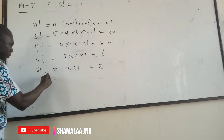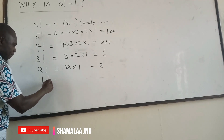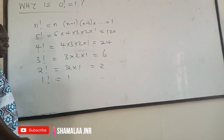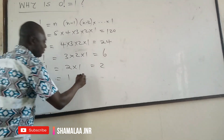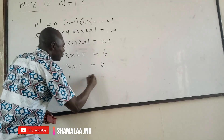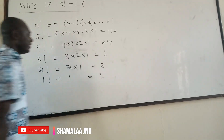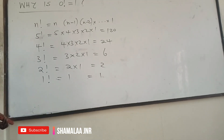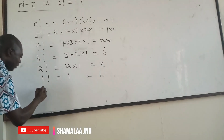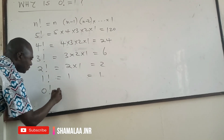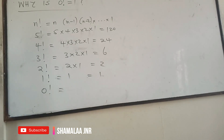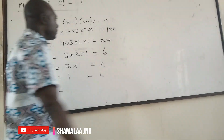Now, 1 factorial is equal to 1. And this is equal to 1. So 1 factorial is 1. Now, 0 factorial — this is equal to... let's look on the board. Let's look at what is happening.